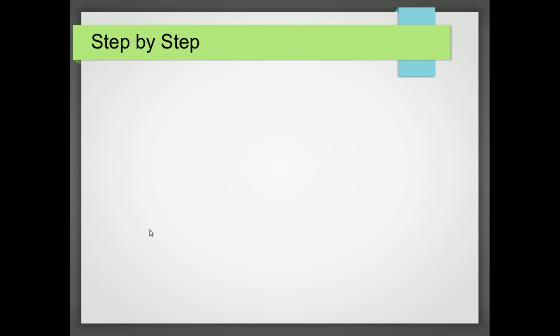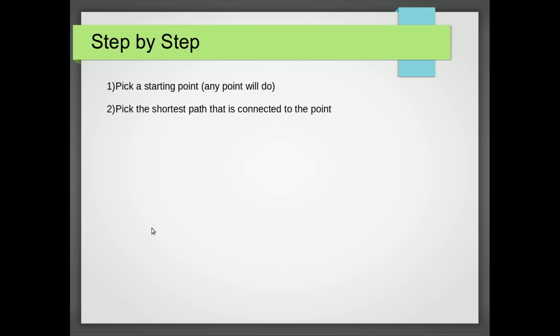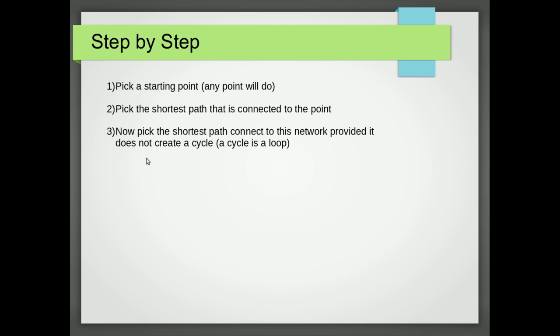So what's the process we go through to use Prim's algorithm to find the minimum spanning tree? Well the first thing we do is we pick any point on the network. Sometimes we'll be given a point to start with. We then pick the shortest path that's connected to this point to create a network. Now we pick the shortest path that's connected to this network provided it does not create a cycle. A cycle is where we create a loop. We then go back to step 3 and continue until we can't pick any more paths without creating a loop.